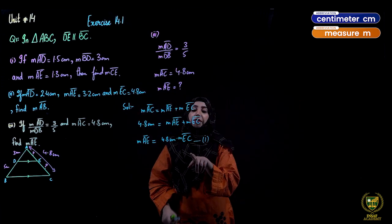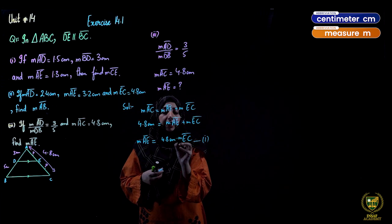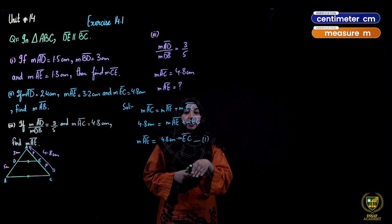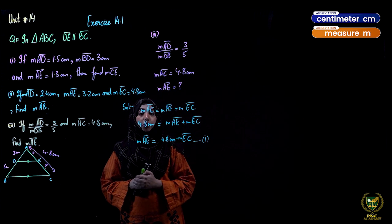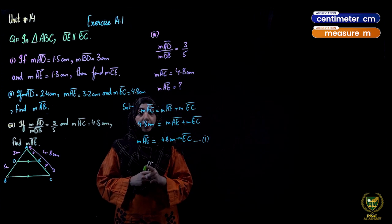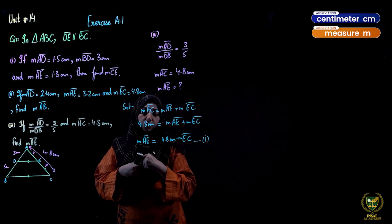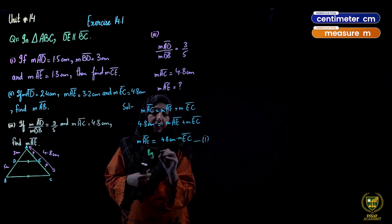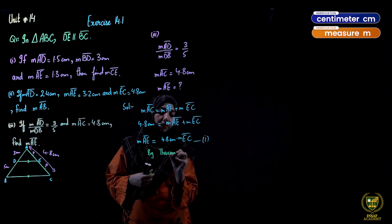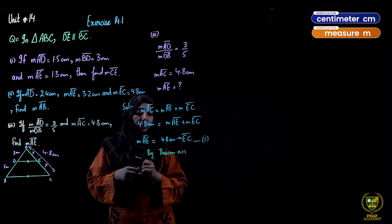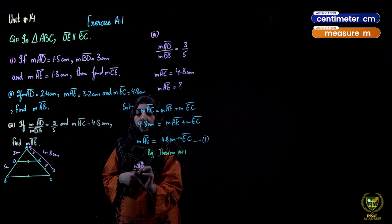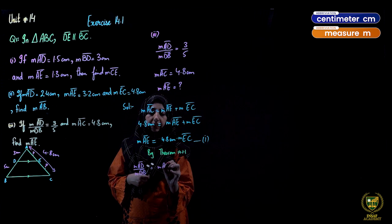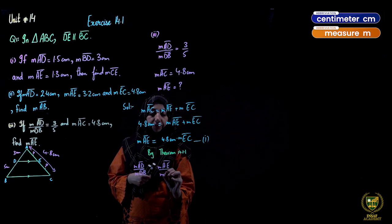We use the theorem: measure AD upon measure DB equals measure AE upon measure EC. Writing the proportion with the known values, substituting AE from Equation 1: measure AD = 3, measure DB = 5.